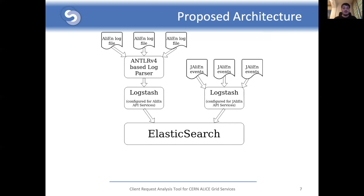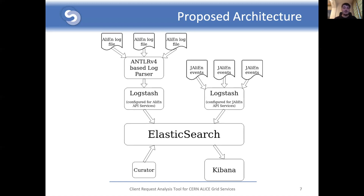The Logstash instances are then connected to an Elasticsearch cluster. It is important to note that the Elasticsearch indexes are created based on the service and the day of the event creation. A Kibana instance is then connected to the same Elasticsearch cluster in order to create dashboards based on the index data. These dashboards will be exposed directly to the ALICE software development team, where they will also be able to search for a specific request if needed. Kibana stores its internal configuration in a separate Elasticsearch index. Finally, a Curator instance is set up to do index management operations, like deleting indexes that are older than 30 days.